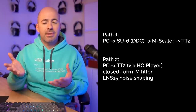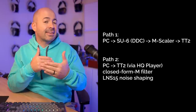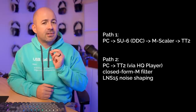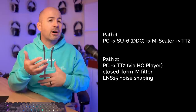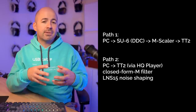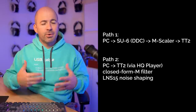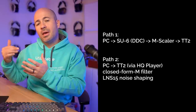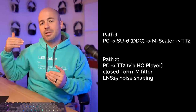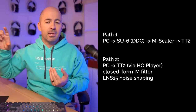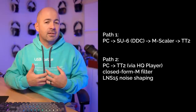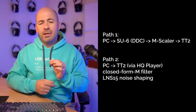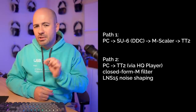You should also pull back a little on the output volume in HQ Player because if you get those oversamples where the reconstructed waveform goes higher than any of the individual samples, you need headroom to avoid clipping and harshness. Once I had everything set up and volume matched, I could quickly switch between having the M-Scaler into the TT2 or having just HQ Player into the TT2.